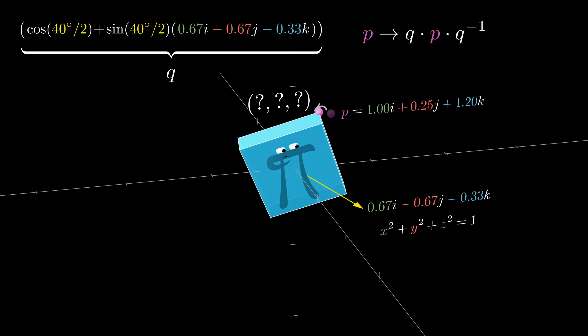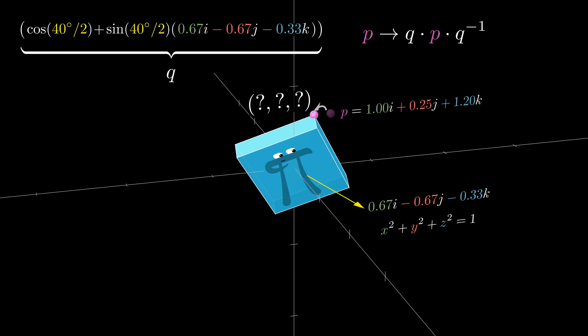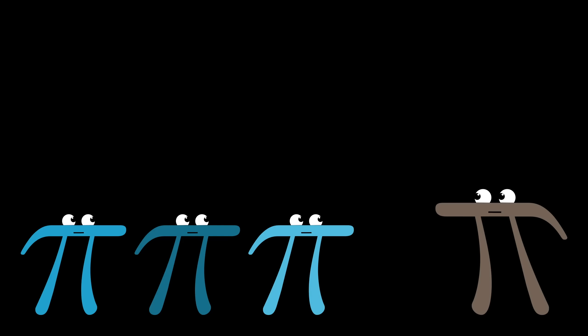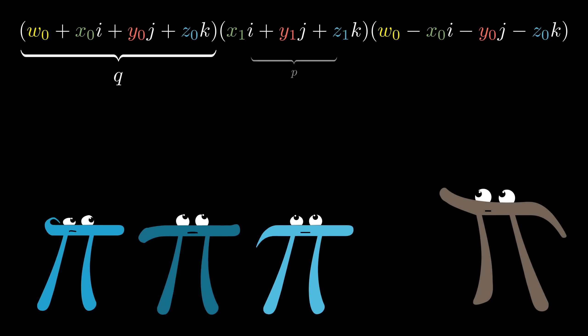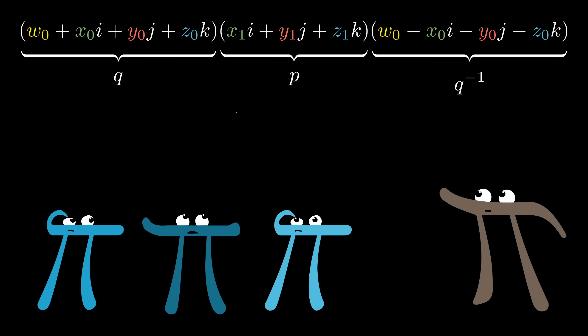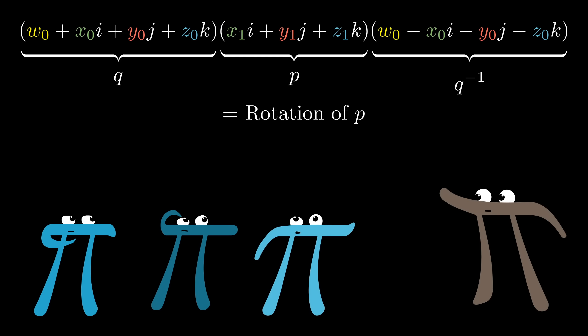If you know the rules for how i, j, and k multiply amongst themselves, you can carry out these two products by expanding everything out, or more realistically by having a computer do it for you. And, in what might feel like a bit of black magic, this big computation will return for you the rotated version of the point.